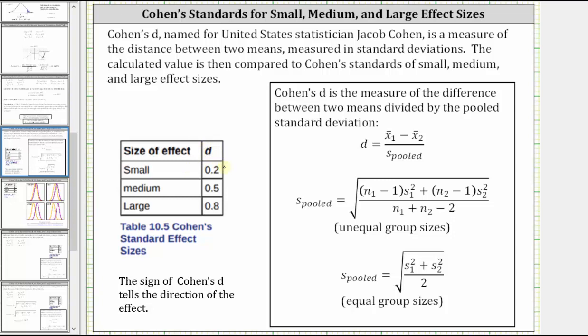Keep in mind these are just guidelines. A small size of effect has a d value of approximately 0.2. A medium size of effect has a d value of approximately 0.5. And a large size of effect has a d value of 0.8 or more.